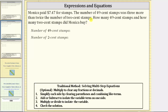We will first write expressions for the number of 49-cent stamps and the number of 2-cent stamps. Because we're told the number of 49-cent stamps was three more than twice the number of 2-cent stamps, let's let the variable s represent the number of 2-cent stamps.